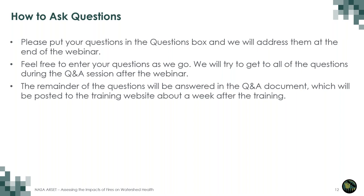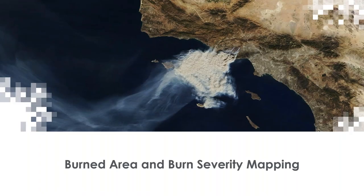A lot of information was covered in the first two sessions, and we'll continue to build on our understanding of the Woolsey Fire for part three. I want to remind you that you're free to enter questions as we go. We will try to get to all the questions during the Q&A session, and any remaining questions will be answered in the Q&A document posted to the training website about a week after the training. So now on to our first topic: burn severity mapping.